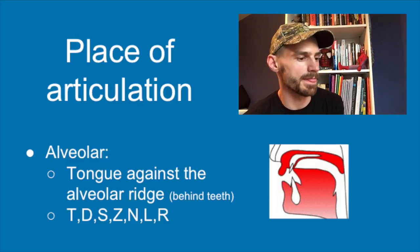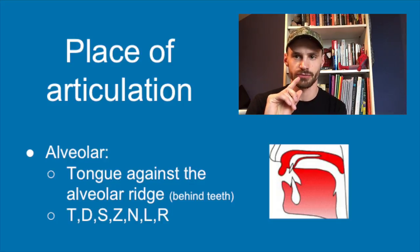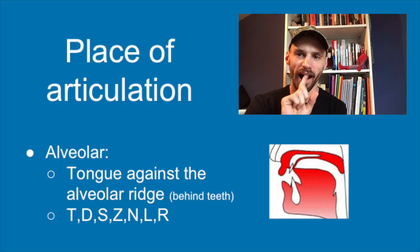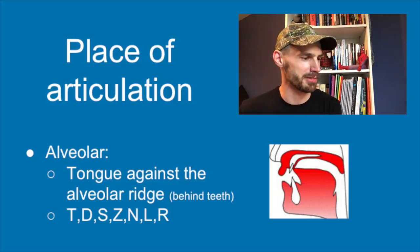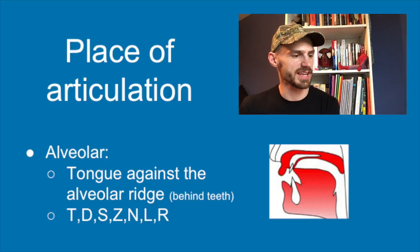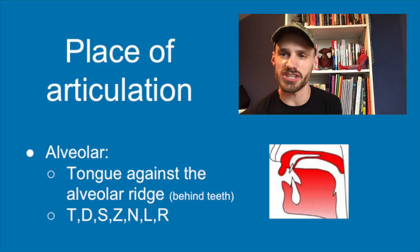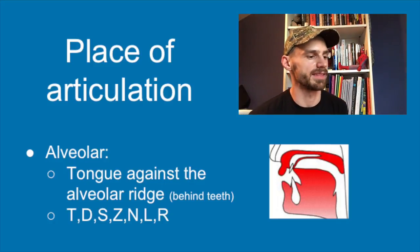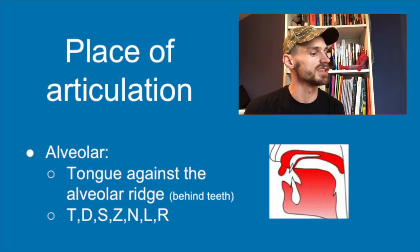Alveolar sounds: your alveolar ridge is a portion of your mouth right behind your teeth. You can't see it in the video, but you might be able to touch it or feel it with your tongue. You can see it in the sagittal diagram — the tongue is just touching right behind the teeth. We have a lot of alveolar sounds in English: t, d, s, z, n, l, and r.